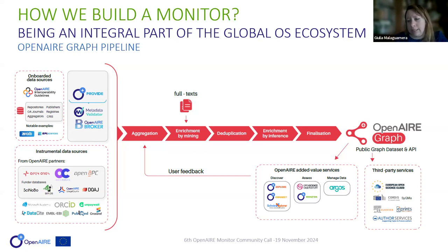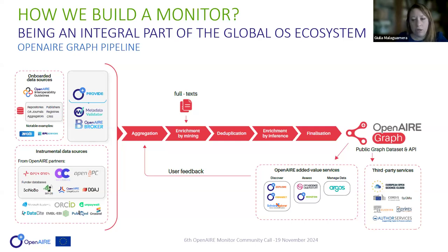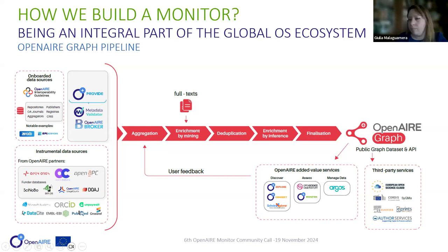From the graph, we have built added-value services for managing data: Argos, which is a machine-actionable DMP tool; to assess and monitor Open Science practices, we use the Open Science Observatory or the Open Air Monitor; and for discovery, we have Open Air Explore or Connect, which you can curate with all the information you need. Moreover, we have the Scholar Explorer, a service that helps in linking data, publications, datasets, and other research products together.